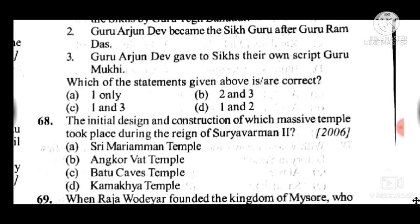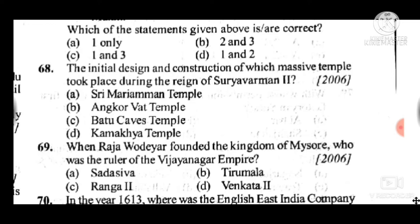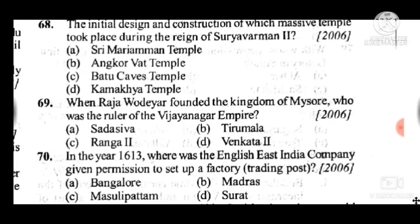Question 69: When Raja Udayar founded the kingdom of Mysore, who was the ruler of the Vijayanagara Empire? Answer is D, Venkata II. Question 70: In the year 1613, where was the English East India Company given permission to set up a factory (trading post)? Answer is D, Surat.